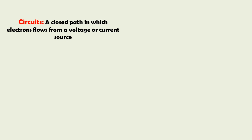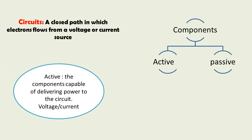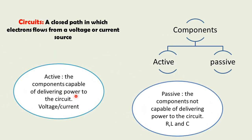A circuit needs components. We can have two types of components: active and passive. Active components are those capable of delivering power to the circuit — examples are voltage sources and current sources. Passive components are those not capable of delivering power to the circuit — these include resistor, inductor, and capacitor. So we have two active components and three basic passive components: R, L, and C.